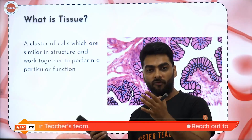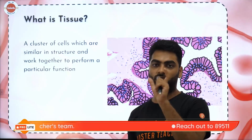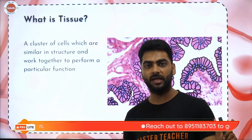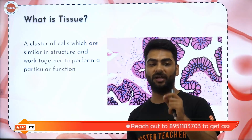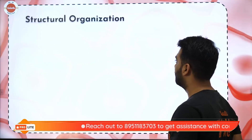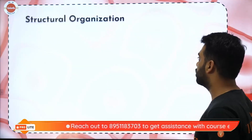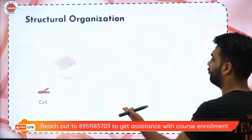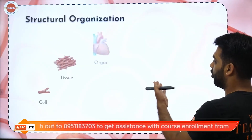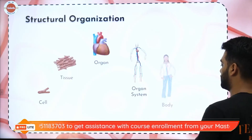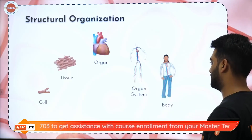One tissue will perform one particular function because it is made of the same type of cells. Then, structural organization: a cell forms a tissue, forms an organ, forms an organ system, forms an organism.